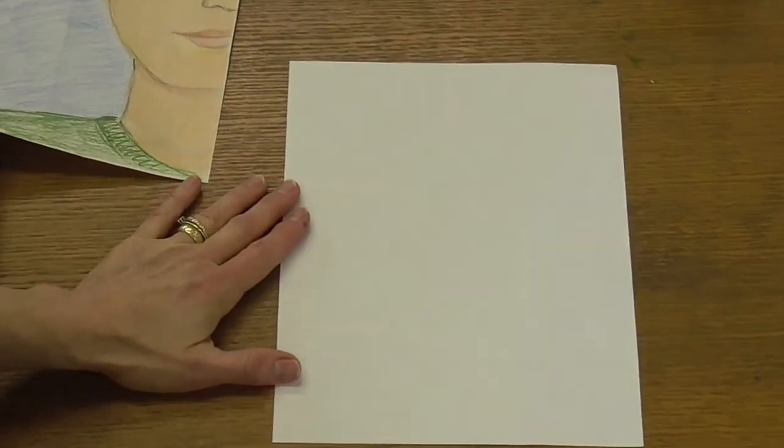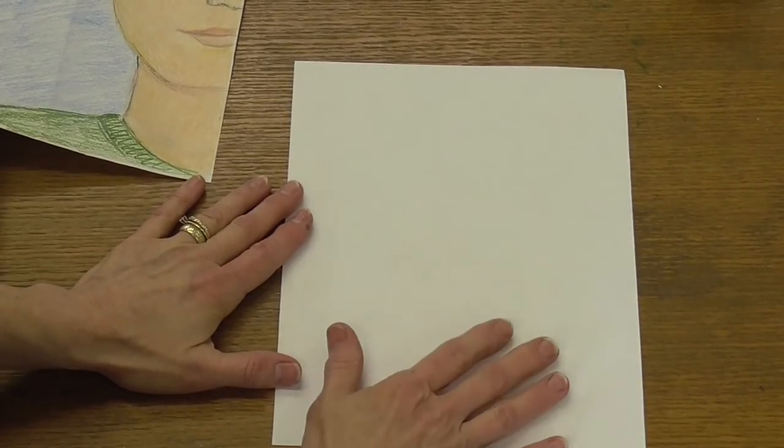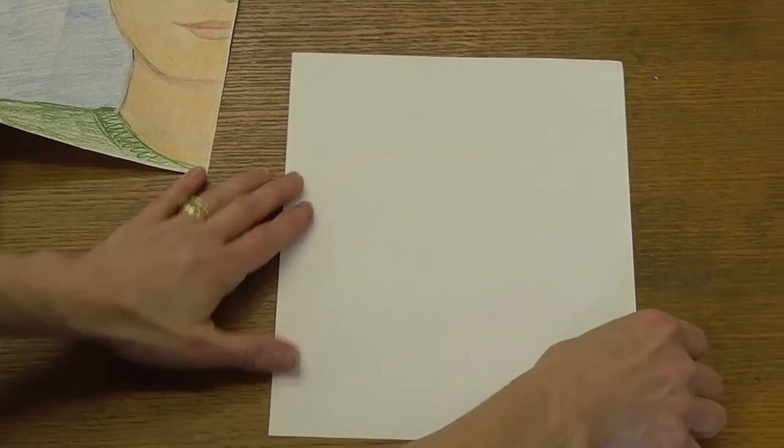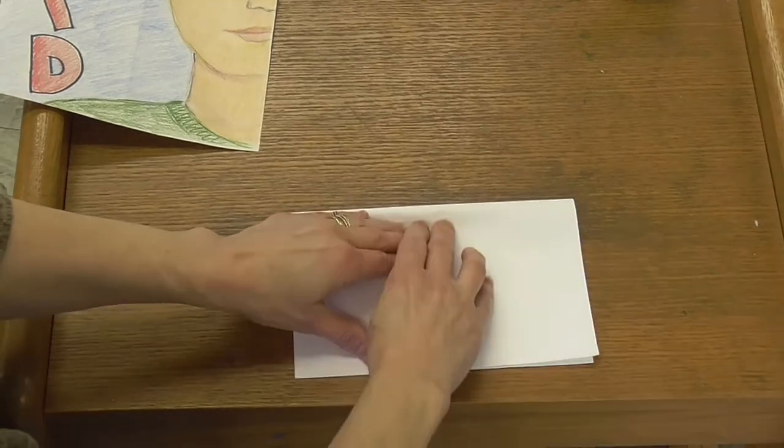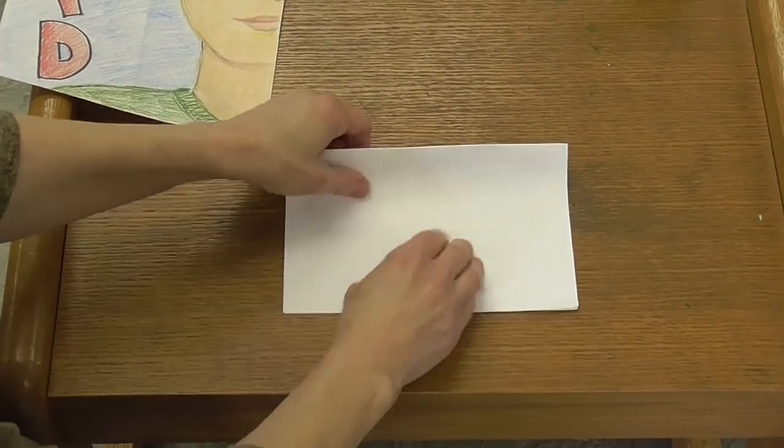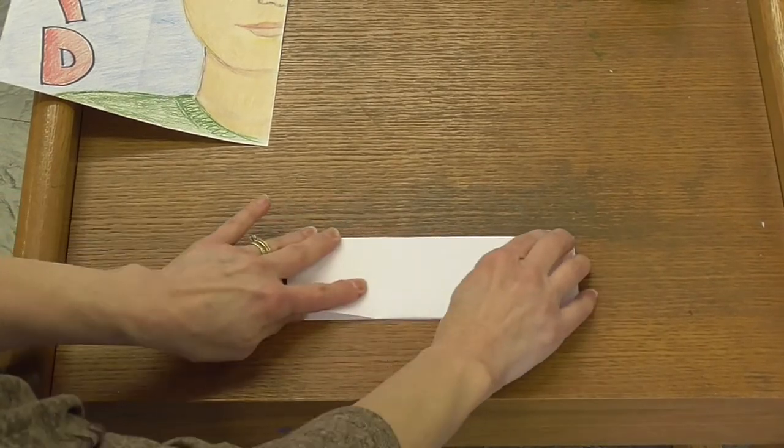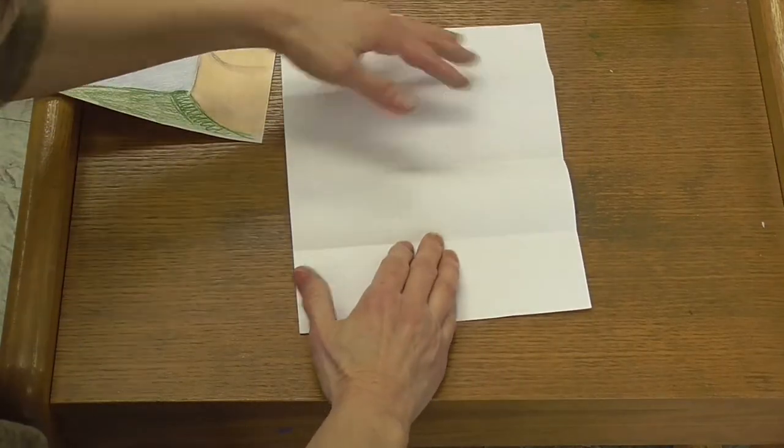You can start with a piece of paper, and we're going to fold it so that we can get some guidelines of where to put everything we need. First thing I'm going to do is fold it in half. You want to try and get it as close as you can. I'm going to fold it in half again.